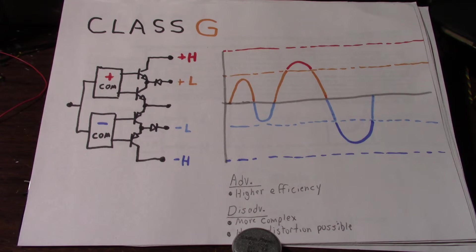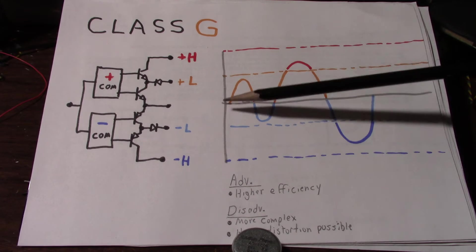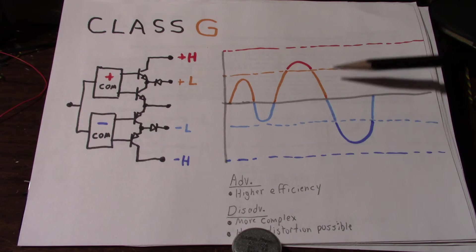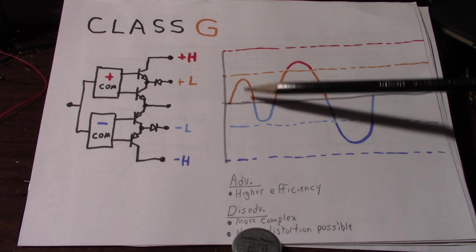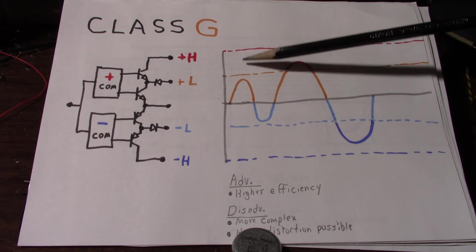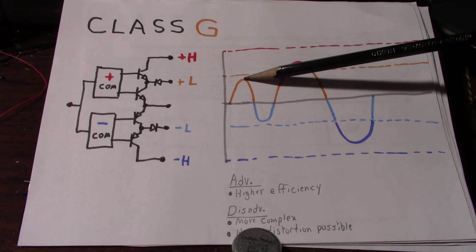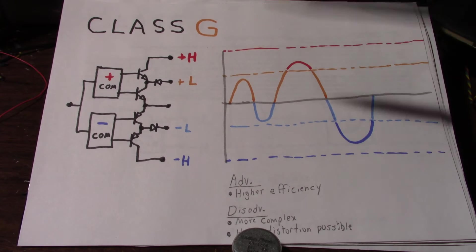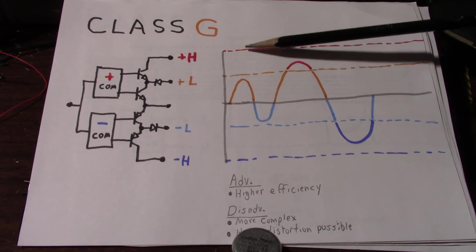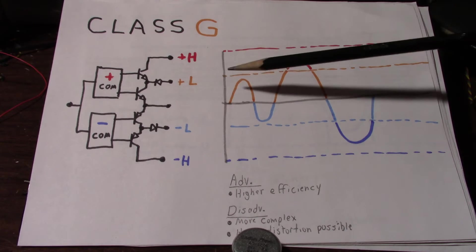So what's the efficiency of Class G? Well, it actually depends on the signal voltage. At maximum output, which would be all the way up to these rails, it's pretty much the same as a regular Class AB amplifier. But at lower signal levels, there's not that huge voltage drop all the way from the high rail to whatever the voltage is on the signal here. You won't have that wasted as dissipation in the transistors.